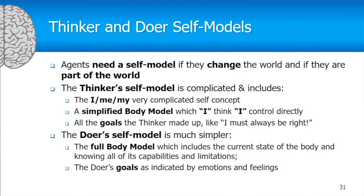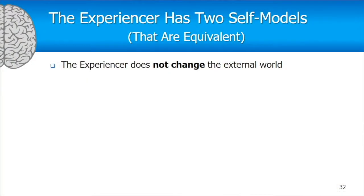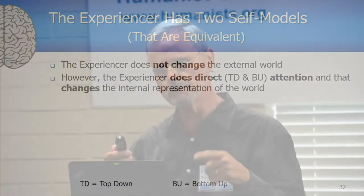At first glance, the experiencer looks like it doesn't need a self-model, because the experiencer doesn't change the external world — all it's doing is taking information in. However, the experiencer does pay attention, both top-down and bottom-up, and attention changes the internal representation of the world. When you're paying attention to a certain area, you're amplifying that signal so that the thinker and the doer can do something with it.